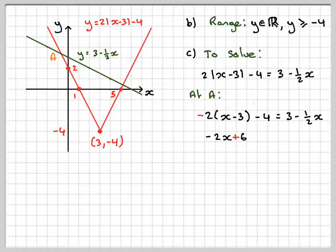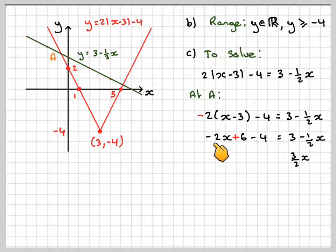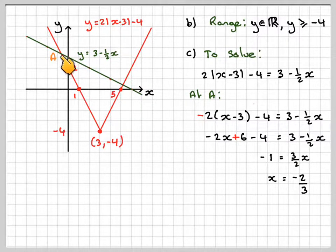So, it's minus 2x plus 6 minus 4 is equal to 3 minus a half x. Taking the minus 2x over there and bringing the 3 over there, we're going to get 3 over 2x minus a half plus 2x. And then we've got 6 minus 4 take 3, which is going to give me minus 1. And then multiplying by 2 and dividing by 3, we're going to get that x is minus 2 over 3, which does correspond to the graph. We'll mark that on the graph.